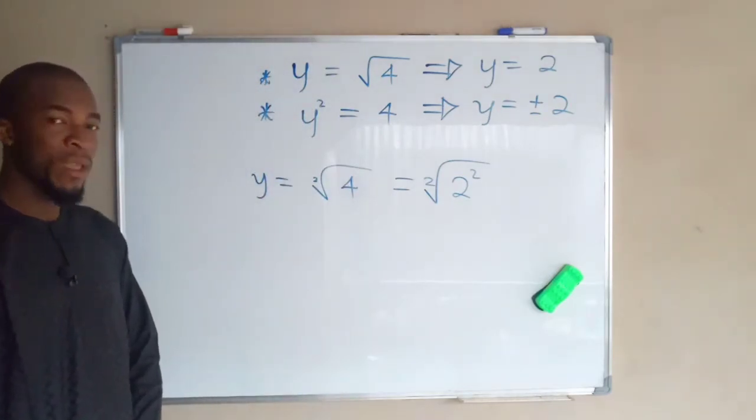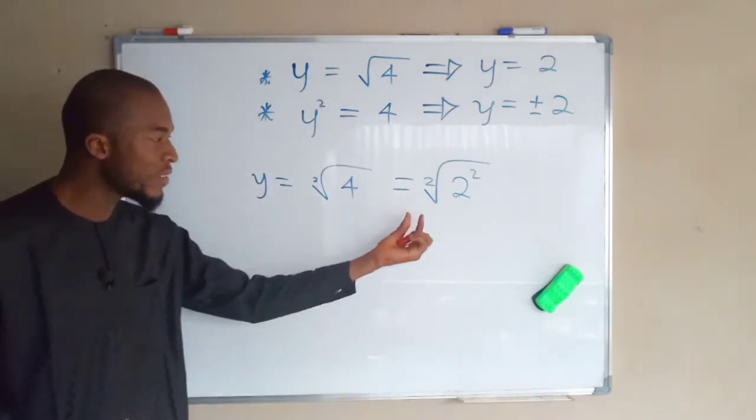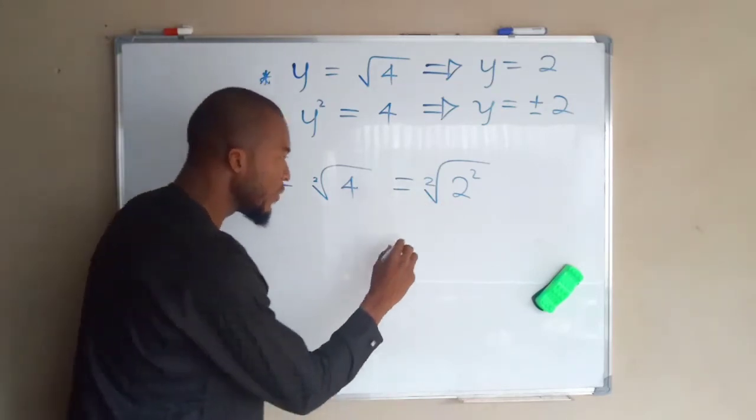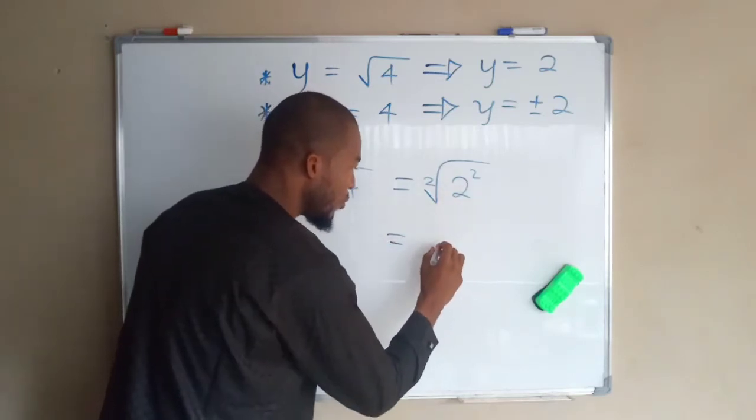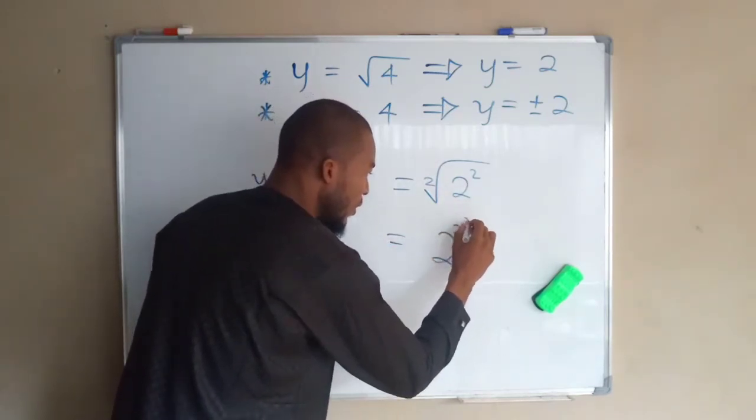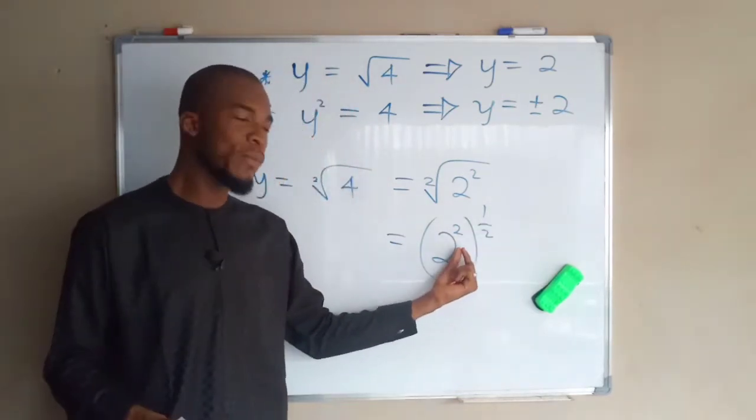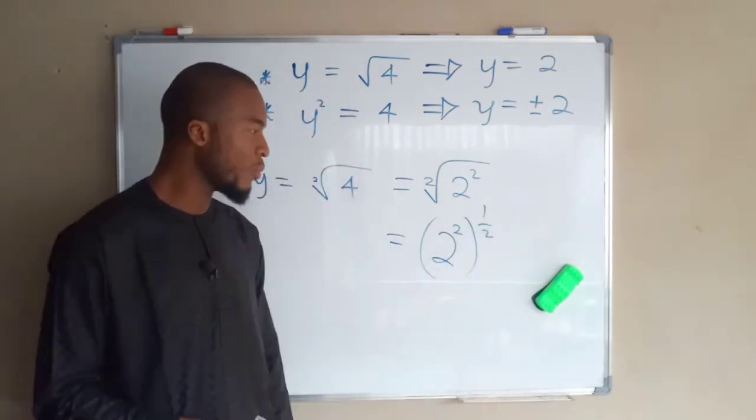From laws of indices, a square root of a number can also be transformed to an index form. So this becomes two to the power of two to the power of one over two. The number raised to the power of one half is the same thing as the square root of that number.